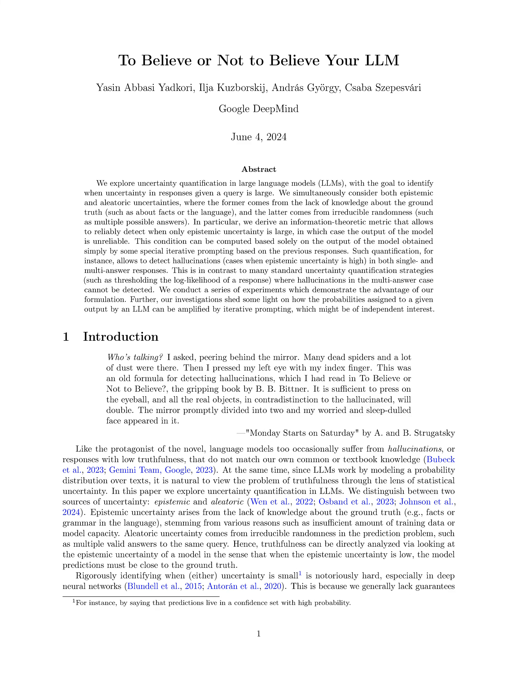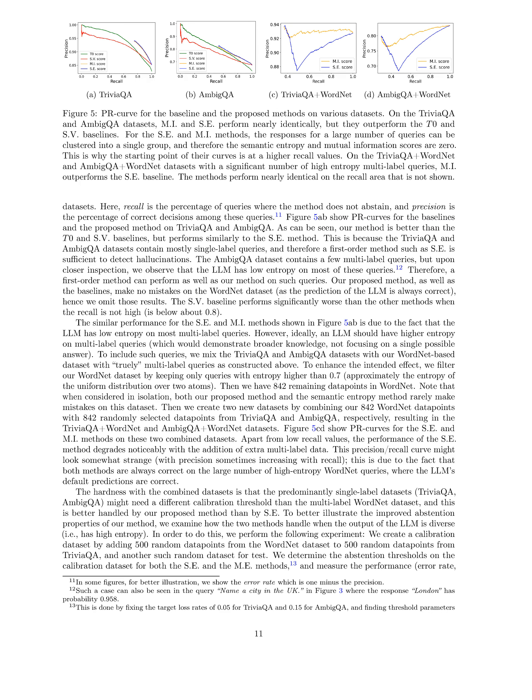The method was effective in handling diverse outputs of the language model, particularly in scenarios where the LLM's predictions were more varied and had higher entropy. Overall, the results showed that the proposed method based on mutual information estimation was successful in detecting hallucinations and improving decision-making in language models, especially in scenarios with multi-label queries and diverse outputs.